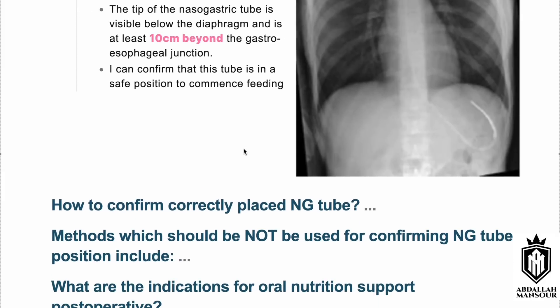To confirm the NG tube is correctly placed, the first step is to take an aspirate and measure the pH, which should be consistent with the pH of the stomach. If we fail to get an aspirate, we can obtain a chest X-ray to confirm the exact location of the NG tube.